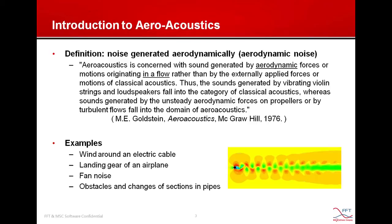Some examples of aero acoustic noises: when wind goes around an electric cable it creates turbulence and aero acoustic noise. A landing gear of an airplane also creates turbulence and aero acoustic noise. Fan blades rotating, obstacles in pipes, or section changes in pipes all produce aero acoustic noise. More generally, any turbulence could create aero acoustic noise.